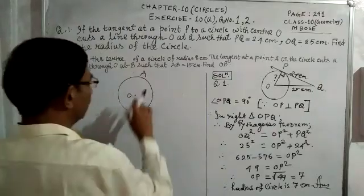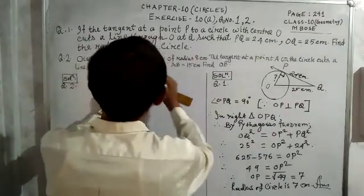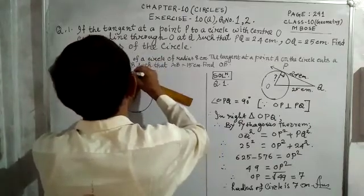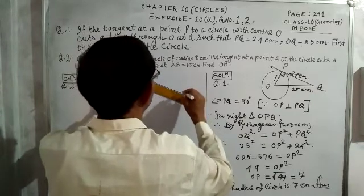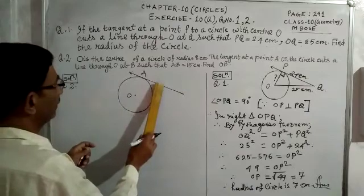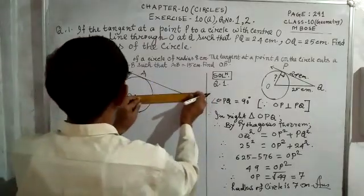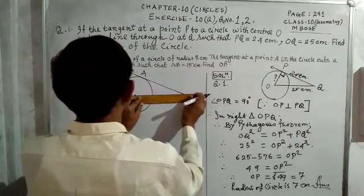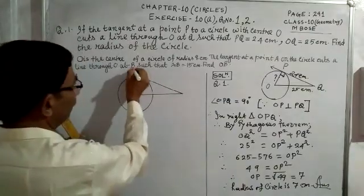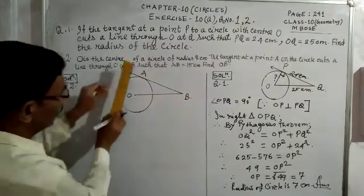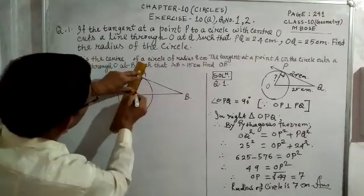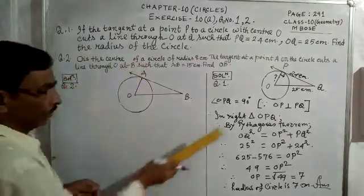Let us complete the figure. Through point A, we draw a tangent. A tangent intersects a circle only at one point. This tangent cuts a line through point O at point B. We join O and A to get the radius. AB is equal to 15 centimeters, and OA is the radius equal to 8 centimeters. We need to find OB.